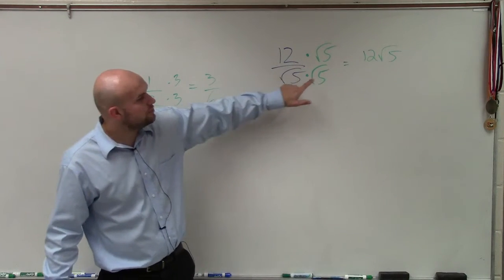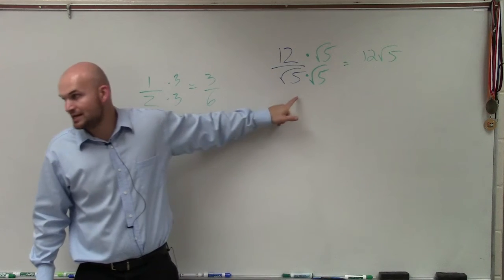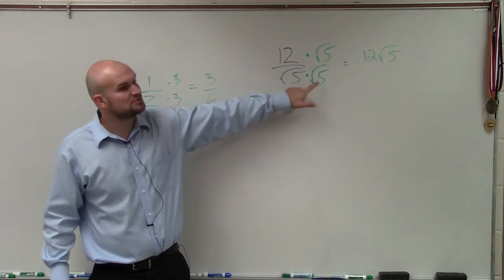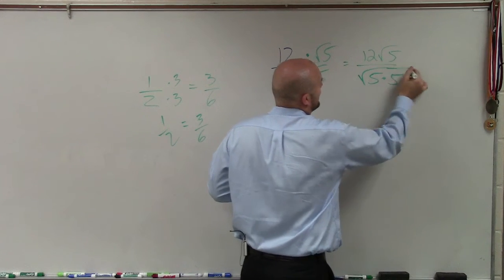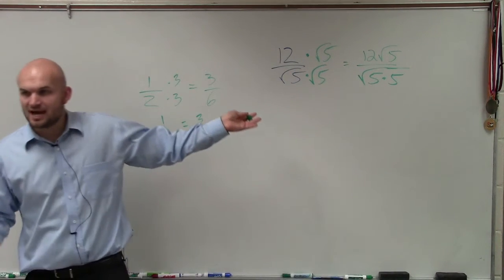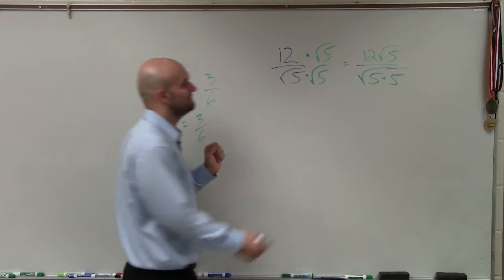But remember, we talked about this, ladies and gentlemen. When you have two radicals, you can multiply the radicands by each other. So square root of 5 times square root of 5 is square root of 5 times 5. Well, we talked about that. We have a square root of a pair of numbers, which is just going to be 5.